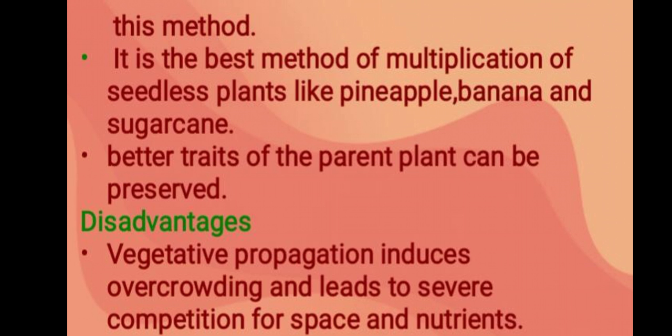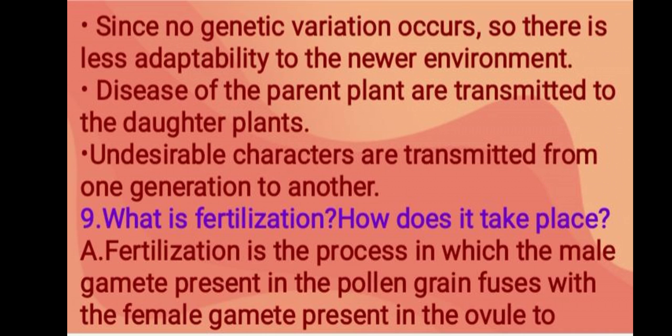Better traits of the parent plant can be preserved with this method. Disadvantages: vegetative propagation induces overcrowding that leads to severe competition for space and nutrients. Since no genetic variation occurs, there is less adaptability to newer environments. Diseases of the parent plant are sometimes transmitted to the daughter plants, and undesirable characters can also be transmitted from one generation to another.